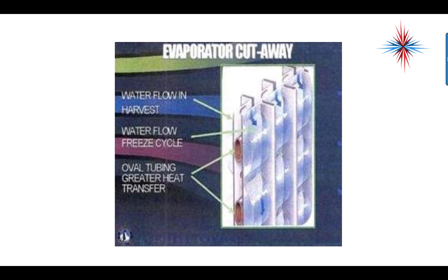If you take a look at the evaporator of any ice machine, this is a cutaway section. The oval tubing in the center has great heat transfer because it has good surface area across the evaporator plates, which are on the outside. Our refrigerant goes through the center of this tubing, removes heat from the plates, and brings the plates down to between 10 and 20 degrees. The water flows down on the outside of this and starts freezing to the plates.